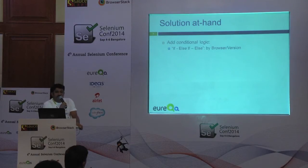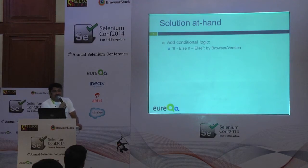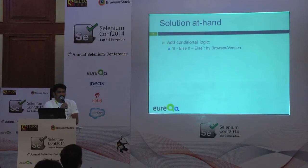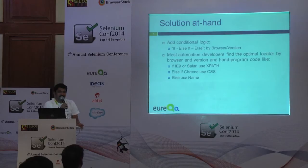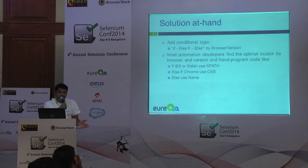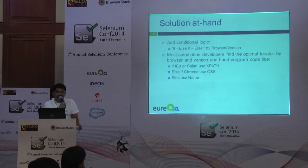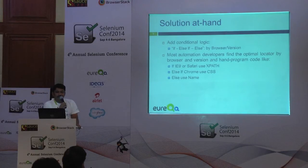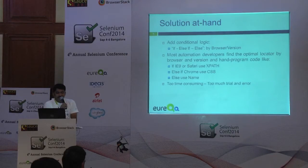Currently, to get the most from the existing solution we have at hand, we tried to work on this problem by adding additional conditional logic — if this is the browser, then pick this locator. We need to do a lot of trial and error going back and forth, identifying different locators that work. For example, a long XPath in IE takes a lot of time or fails most of the time. So we need conditional logic per browser, which is additional work and too time consuming.